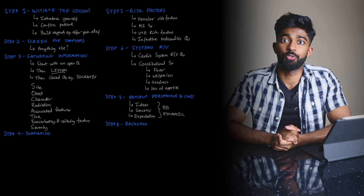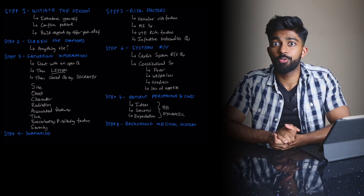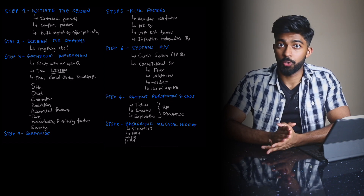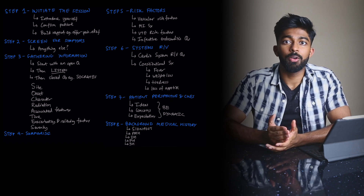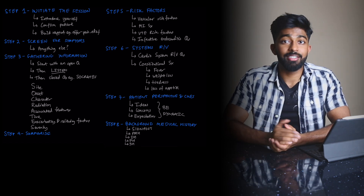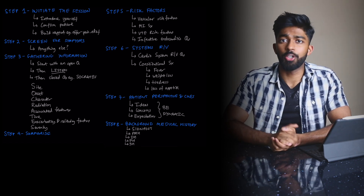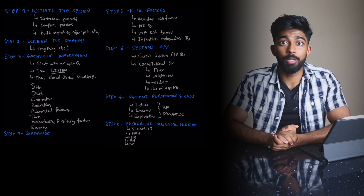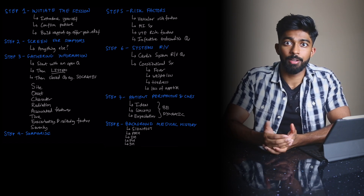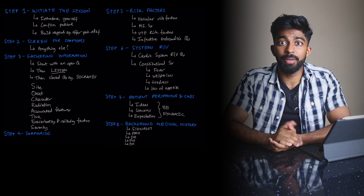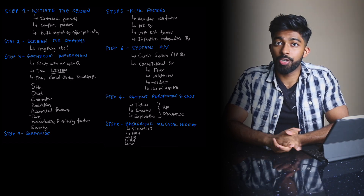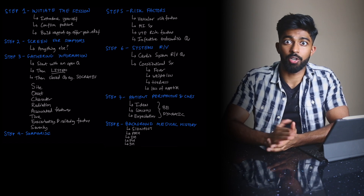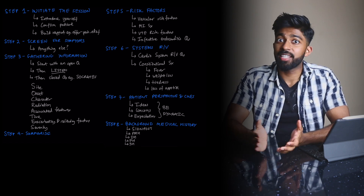Step eight is the background history, involving past medical history, drug history, family history, and social history. Signpost to your examiner that you're moving to this section: 'I'd like to ask some background questions now. Are you normally fit and well? Do you suffer from any medical problems? Do you take any regular medication? Do you have any allergies? Any medical problems that run in the family?' Then your social history: who's at home with you, are you currently working, and then smoking, alcohol, and recreational drug use. Then you thank the patient — that's the end of the history.